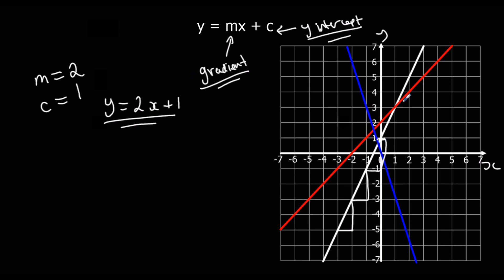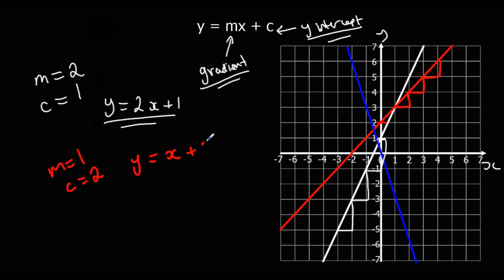The red line: every one it goes across, it's going up one space, so it's got a gradient of one. It crosses the y-axis at two, so it's got a y-intercept of two. That means y equals one x, or just x plus two. That's the equation of the red line.